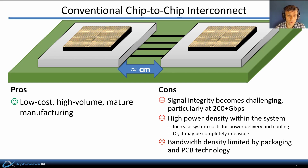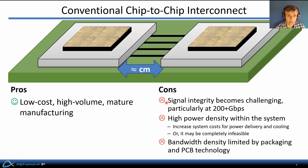Conventional IO is carried between chips on printed circuit boards manufactured with low-cost, high-volume, mature processes. Unfortunately, signal integrity becomes challenging particularly at and above 200 gigabits per second. Improving signal integrity entails high power consumption in the IO circuits, and the resulting high power density on these chips and in the overall system increases the system's cost for power delivery and cooling. In some cases, communicating chips at the required data rates may be completely infeasible.